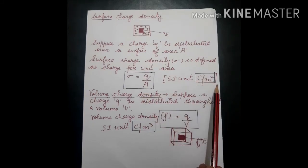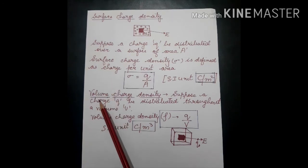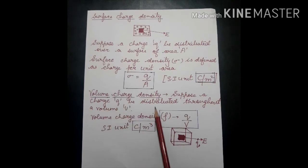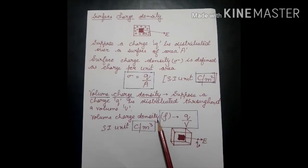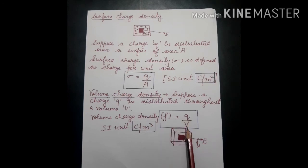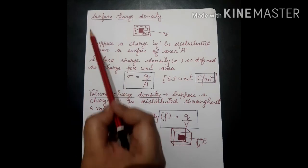Finally, volume charge density: suppose a charge Q is distributed throughout a volume V — meaning a three-dimensional figure such as a cube or cuboid. Volume charge density is denoted by rho (ρ), and is defined as ρ = Q/V, where Q is the charge and V is the volume. The SI unit is coulombs per meter cubed (C/m³).